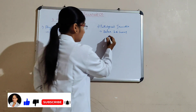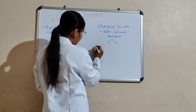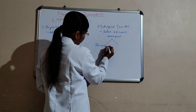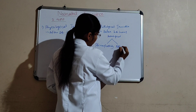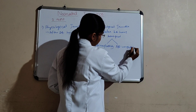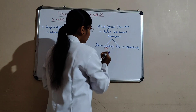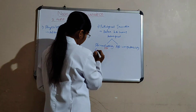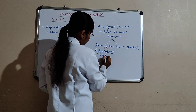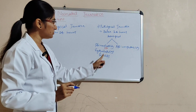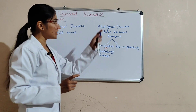Pathological jaundice occurs before 24 hours and is pathological. There will be RH incompatibility and ABO incompatibility. This is also called erythroblastosis fetalis. Due to this pathological condition — ABO incompatibility and RH incompatibility — that is what pathological jaundice is.